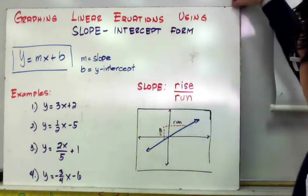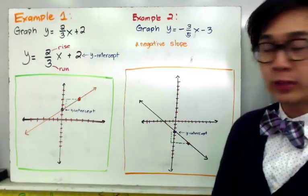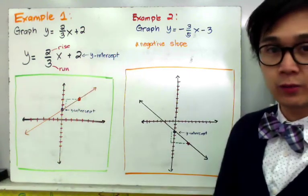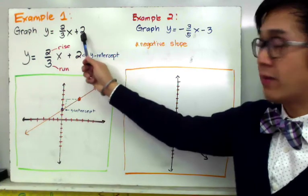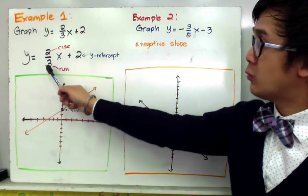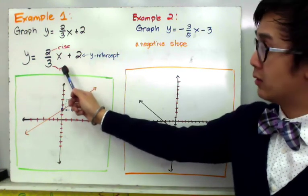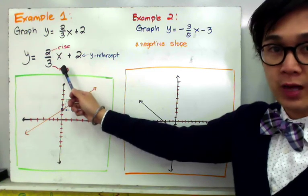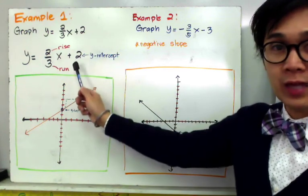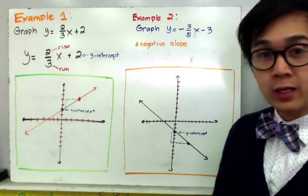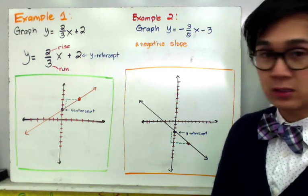For our first example, we're going to graph y = (2/3)x + 2. This is in slope-intercept form with slope 2/3 and y-intercept 2. The slope 2/3 represents the rise over run principle we'll use to find the second point, and the y-intercept of 2 is the first point we'll use in graphing our line. We need two points to construct a line, using the y-intercept and the slope.